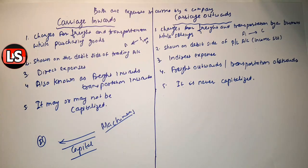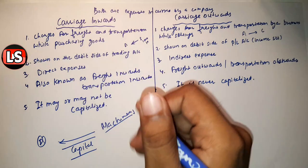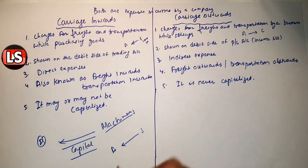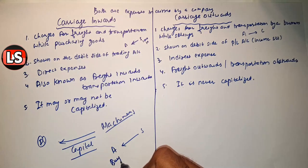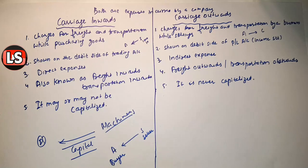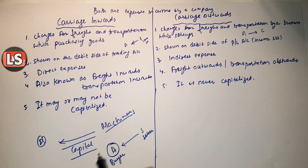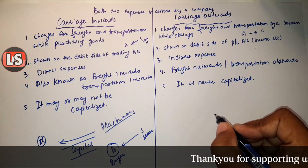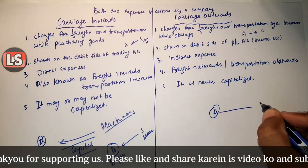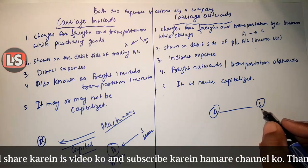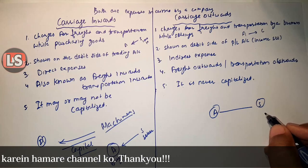Another difference is that for carriage inward, mostly the buyer is responsible — as mentioned, a person procures goods from a supplier, so generally the buyer bears the cost. However, in some cases carriage inward can also be borne by the seller, depending on negotiation. But mostly the buyer pays carriage inward. Similarly for carriage outward — in the seller's case, carriage outward is generally borne by the seller.